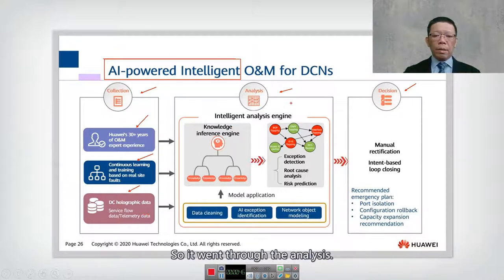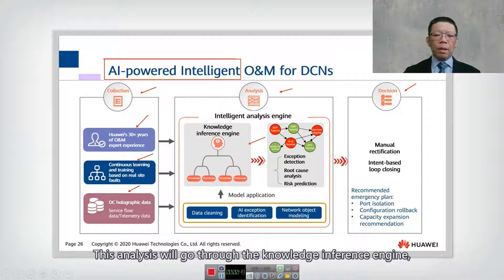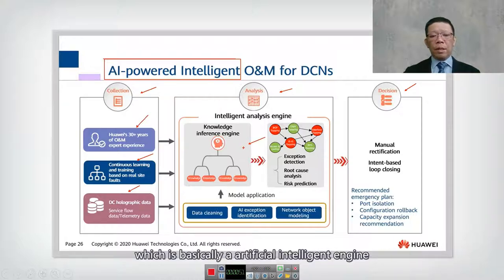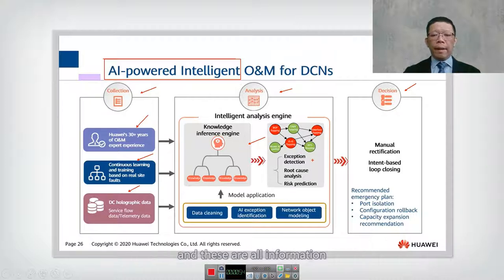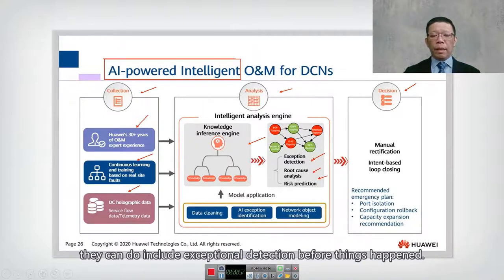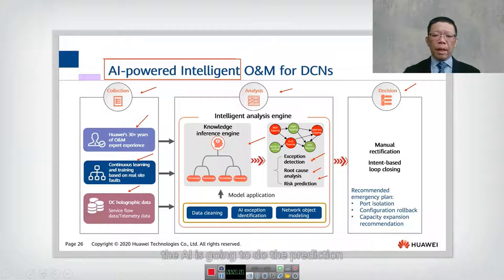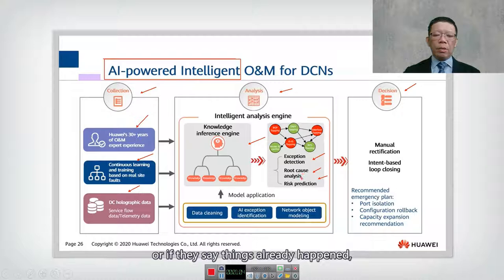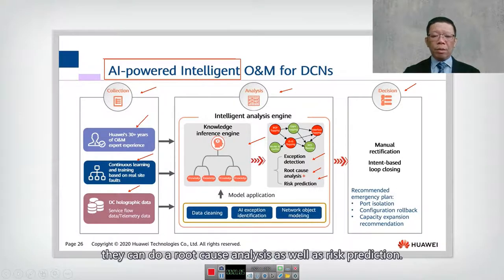The data then goes through analysis via the knowledge inference engine, which is essentially an artificial intelligence engine. This includes exception detection — before things happen, the AI does prediction. If things have already happened, it can do root cause analysis as well as risk prediction.